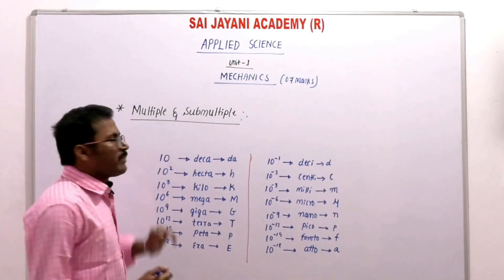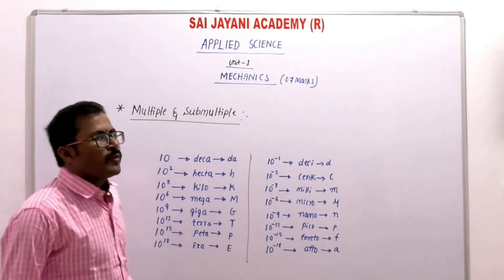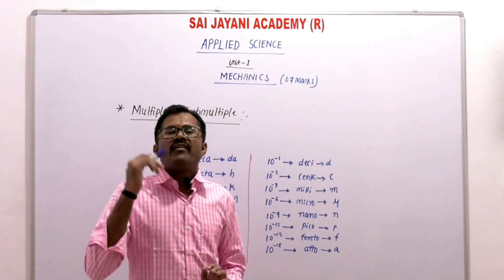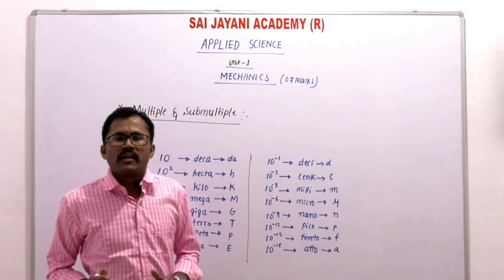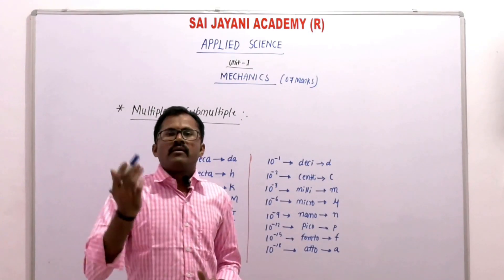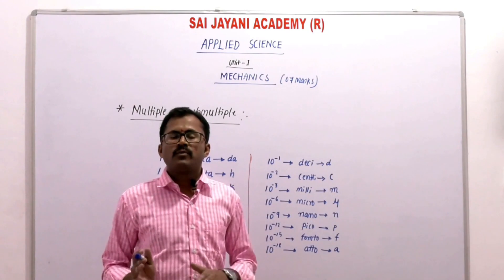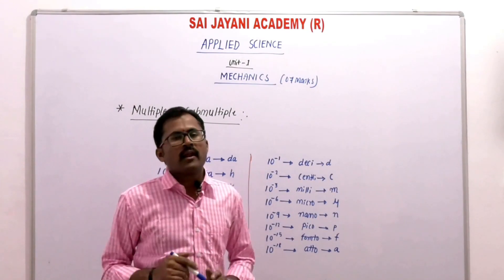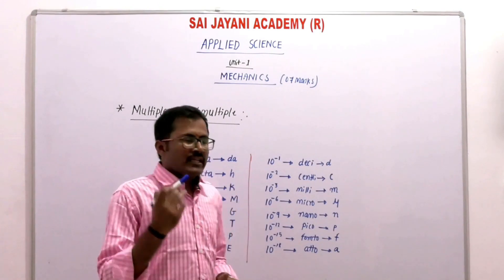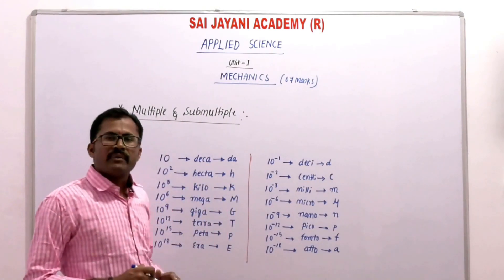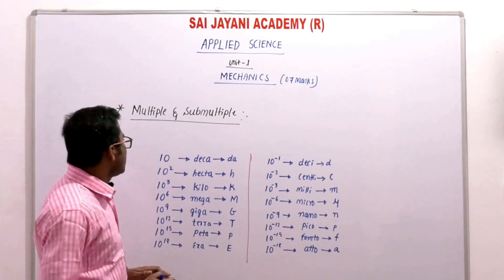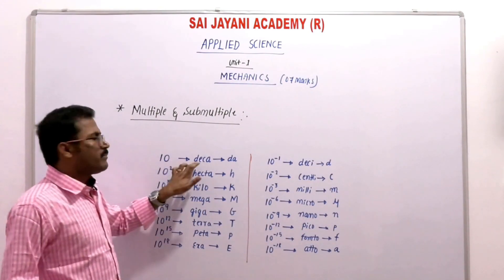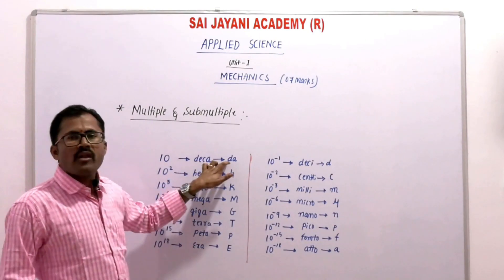The next concept is multiples and submultiples. We represent very small values and very large values using powers of 10 — that is, 10 to the power of positive or negative values. This is how prefixes are used for multiples and submultiples. For example, 10 is called deca and its symbol is 'da'.